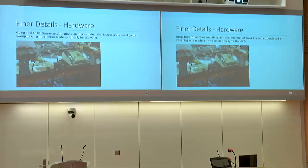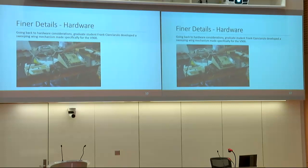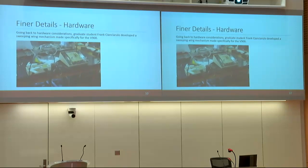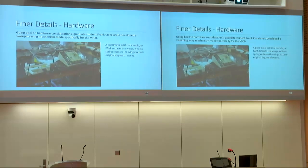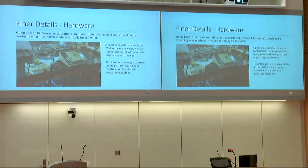Graduate student Frank Cianciarulo developed a sweeping wing mechanism specifically for the V900. It is digitally controlled and uses a pneumatic artificial muscle that retracts the wing backwards. Once the wings are fully retracted, the muscle relaxes and a spring restores the wings to their original position. With this additional hardware and the speeds involved, since it can't activate instantaneously, we have a new weight and timing constraint on the obstacle avoidance algorithm and the platform itself.